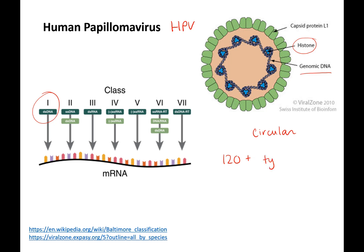There are about 120 types of HPV. A few we'll be talking about are HPV 16 and HPV 18. In the reading there are lists of different HPV virus types, which means they have slightly different genetic information. A lot of the different types are based on the capsid protein, so if your body has antibodies to HPV 16, it won't have antibodies to HPV 18.